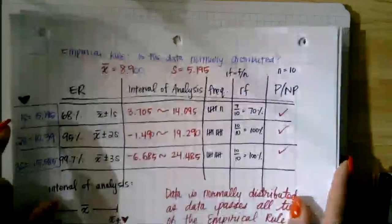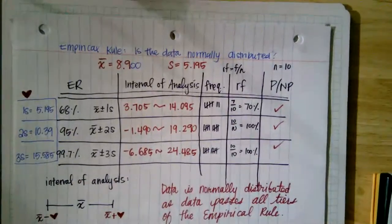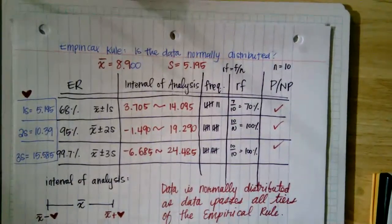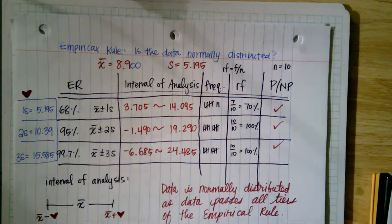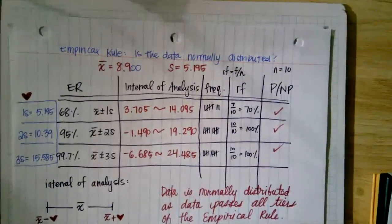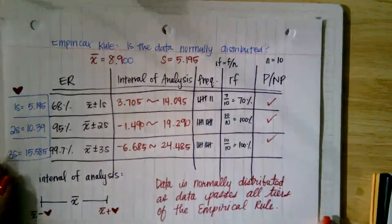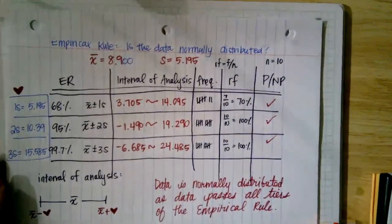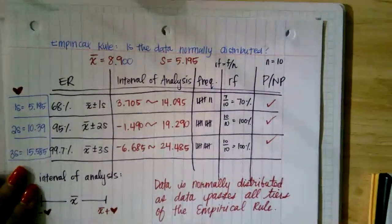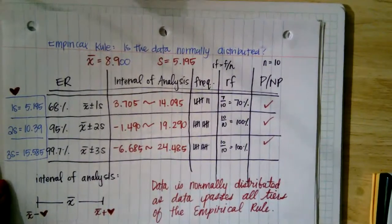Now I'm going to see if this data is normally distributed. Normal distribution means when I plot my data, it has a bell-shaped curve with symmetry. I have a test to see if it's truly normal — the empirical rule, which has three tiers. In order for data to be normally distributed, it must satisfy all three requirements.